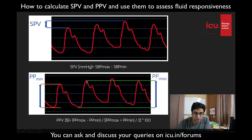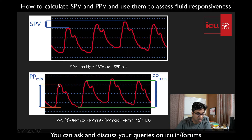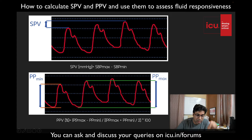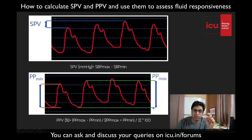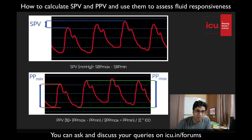For example, if systole is 100 and diastole is 60, maximum pulse pressure is 40. If systole is 80 and diastole is 60, minimum pulse pressure is 20. The formula is: PPmax minus PPmin, divided by the average of PPmax and PPmin, multiplied by 100. We will apply this formula in the live recording.